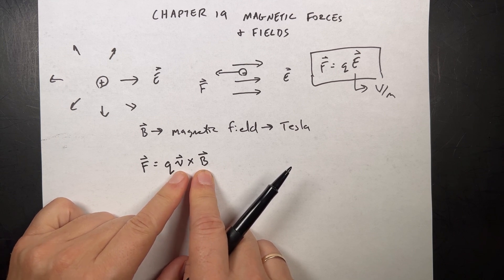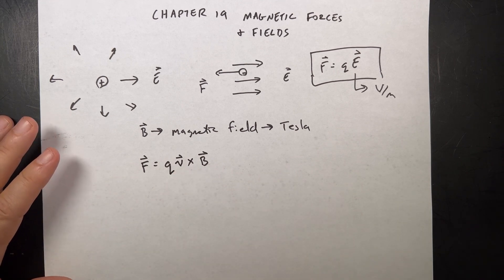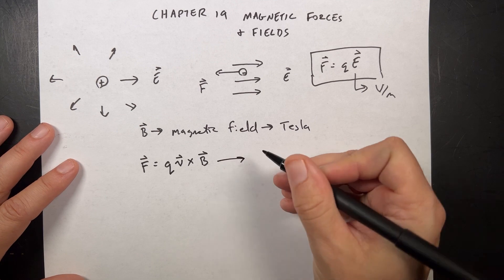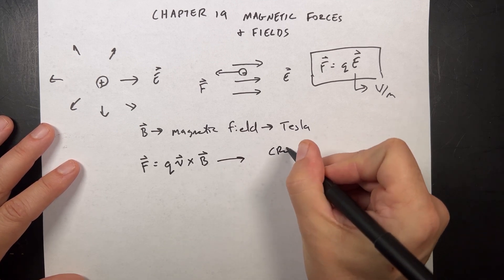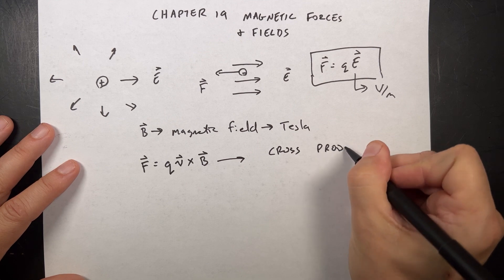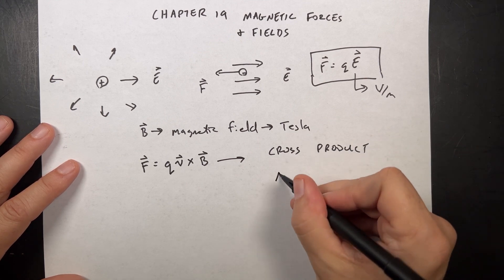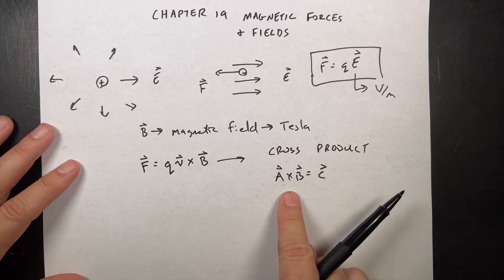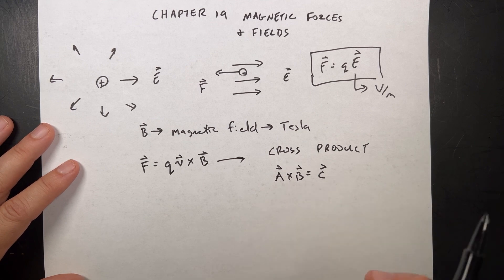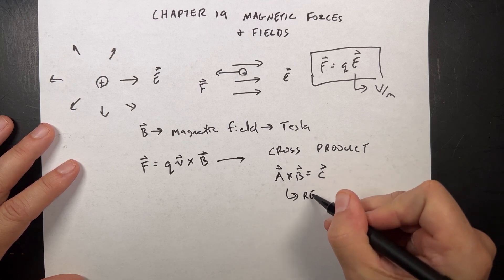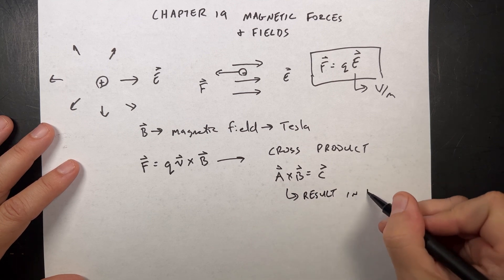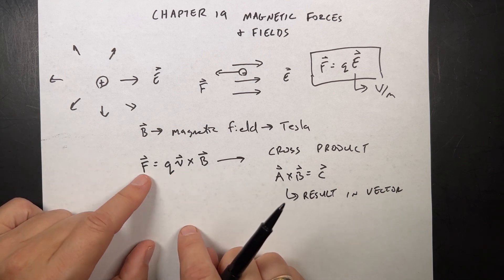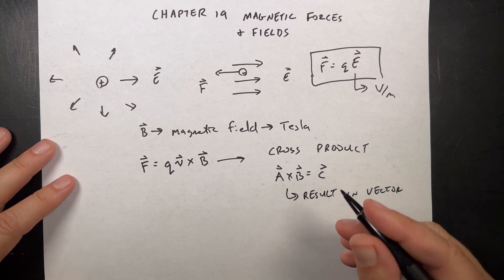I'm not going to go over all the details because this is an algebra-based course, but we're going to do it in an easy way. If I have two vectors — vector A cross vector B equals vector C — the first thing is that the operation of these two vectors gives another vector. And you'll notice that B is a vector, the velocity is a vector, and I need force as a vector too.